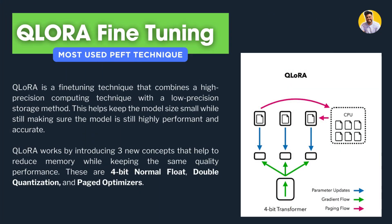The next technique is QLoRA fine-tuning. QLoRA is the best technique to use after LoRA because it combines high-precision computing with a low-precision storage method. It works by using the processing power of high-precision computing while storing the data in low precision — using floating-point number precision. This helps keep the model size small while ensuring the model remains highly performant and accurate.